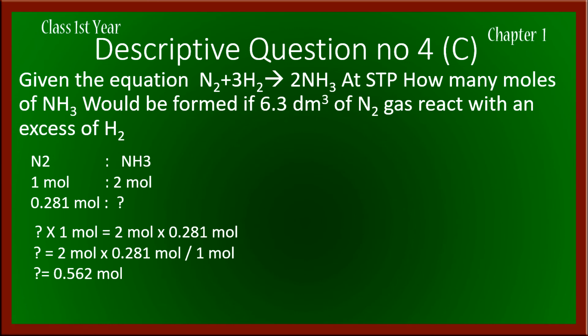After solving the ratio, the number of moles comes out to be 0.562 moles. Thus, the number of moles of ammonia produced from 6.3 dm³ of nitrogen is 0.562 moles.